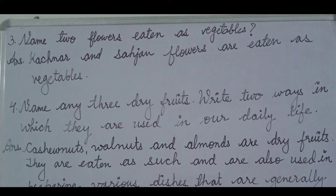Question number four: name any three dry fruits and write two ways in which they are useful in our daily life. Answer: cashew nuts, walnuts, and almonds are dry fruits. They are eaten as such.